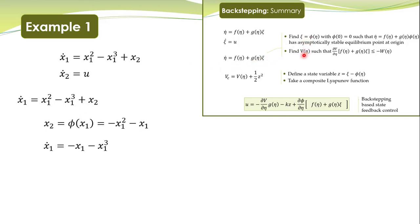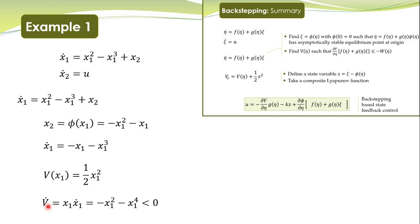Next, we need the corresponding Lyapunov function. For this dynamic system, the quadratic Lyapunov function will work. We take this candidate Lyapunov function and compute its derivative. V-dot equals x1 times x1-dot, where x1-dot is substituted from the dynamics, giving a negative definite function. Since there is only one state, this expression is negative definite, meaning the equilibrium point at the origin is asymptotically stable. Also, phi of 0 equals 0, so this condition is also satisfied.